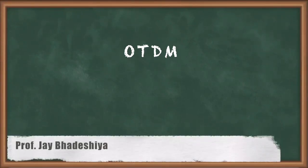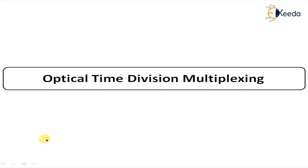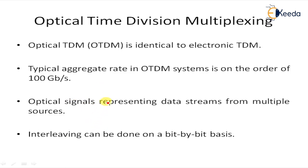Hello students. Here we are going to learn about OTDM, which means optical time division multiplexing. At the input to the network, lower speed streams are multiplexed optically into higher speed streams, and at the output of the network, the lower speed stream must be extracted from the higher speed stream optically. OTDM is identical to electronic TDM — the only difference is that the multiplexing and demultiplexing operations are performed entirely optically for higher speeds. The typical aggregate rate in an OTDM system is on the order of 100 Gbps.